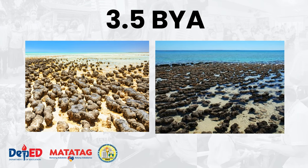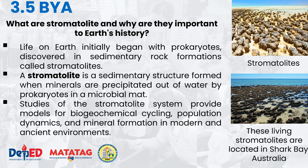3.5 billion years ago, there was the formation of what we call stromatolites. Life on Earth initially began with prokaryotes discovered in sedimentary rock formations called stromatolites. A stromatolite is a sedimentary structure formed by minerals precipitated out of water by prokaryotes in a microbial mat. The study of the stromatolite system provided a model of biogeochemical cycling, population dynamics, and mineral formation in modern and ancient environments. We can find stromatolites in Australia, in the area of Shark Bay. Although most stromatolites are artifacts from the past, there are places on Earth where stromatolites are still forming.